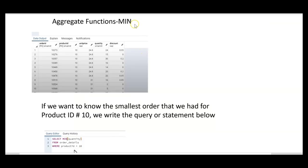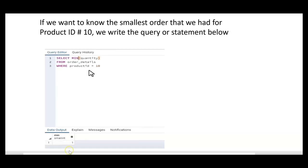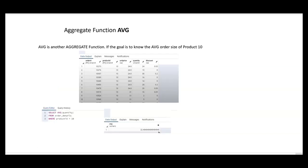What if we wanted to know the smallest order size of product 10? MIN is also an aggregate function. If we want to know the smallest order for product ID 10, we write: SELECT MIN(quantity) FROM order_details WHERE product_id = 10. Not surprisingly, the minimum order was one. So the minimum order size was one, but the average order size we determined to be 22.